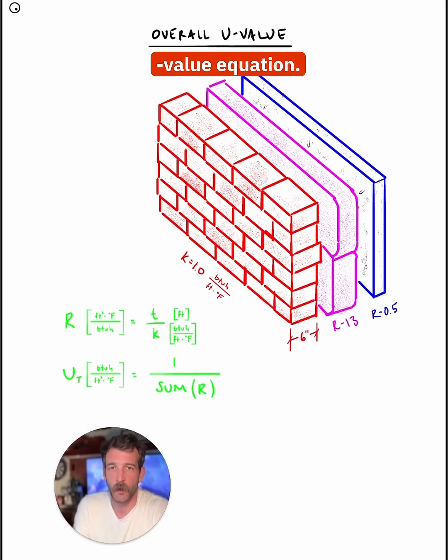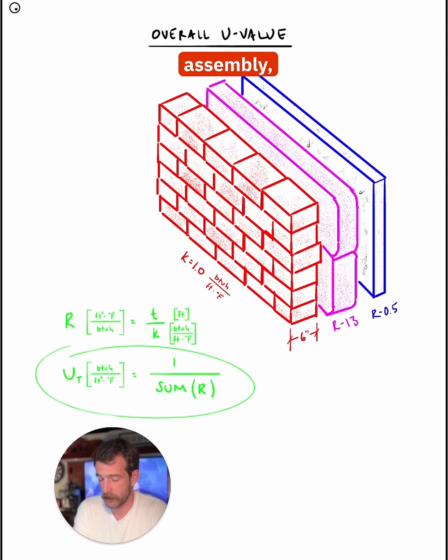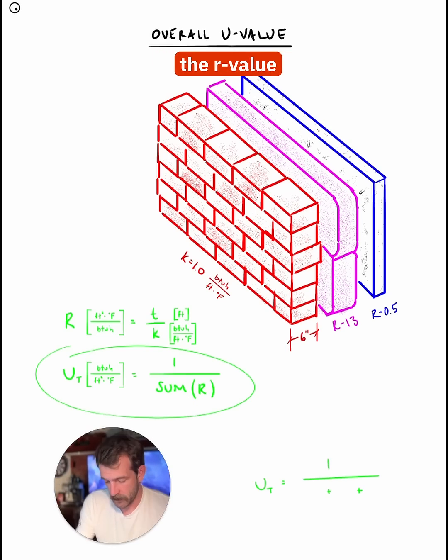Let's start with the total U-value equation. It is simply U equals the inverse of the sum of the R-values. So for this assembly, brick, insulation, drywall, the R-value of my brick, which we'll calculate in a moment, the R-value of my insulation, and the R-value of my drywall.